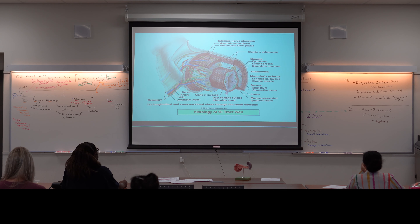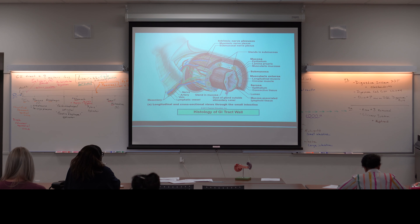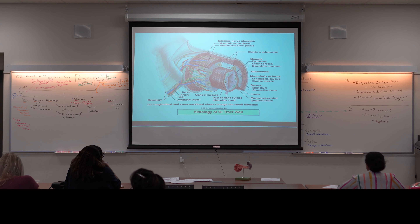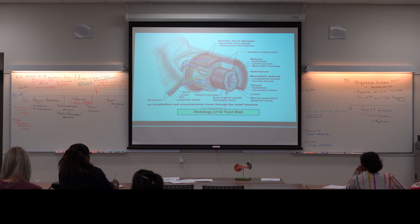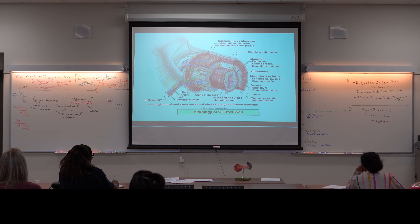We see those same four layers as we move from the esophagus to the stomach, small intestines, and large intestines. There are some adaptations for each segment, but all four layers are present. The epithelial lining of the lumen changes from stratified squamous through the oral cavity, pharynx, and esophagus, to simple columnar cells in the stomach, small intestines, and large intestines.